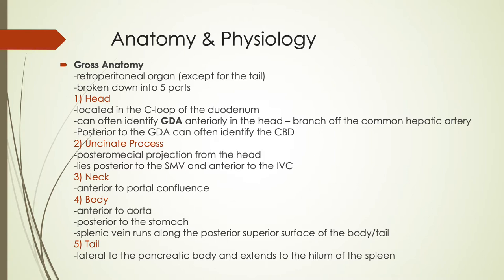The head of the pancreas is located in the C-loop of the duodenum, which can make it quite tricky because bowel gas and ultrasound are not friends. The other relevant anatomy in the pancreatic head that we can identify on ultrasound is the gastroduodenal artery, seen anteriorly, and posteriorly we can see the common bile duct. You guys have already been practicing elongating the bile duct into the pancreatic head, so that should be no surprise.